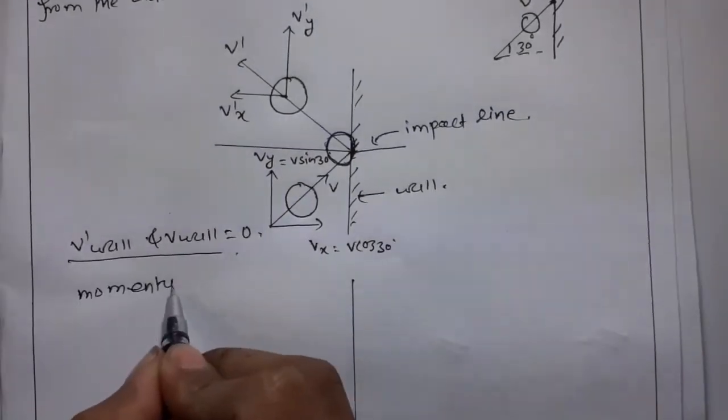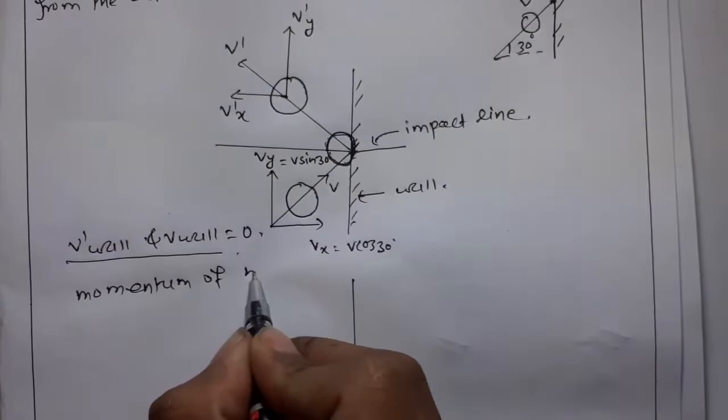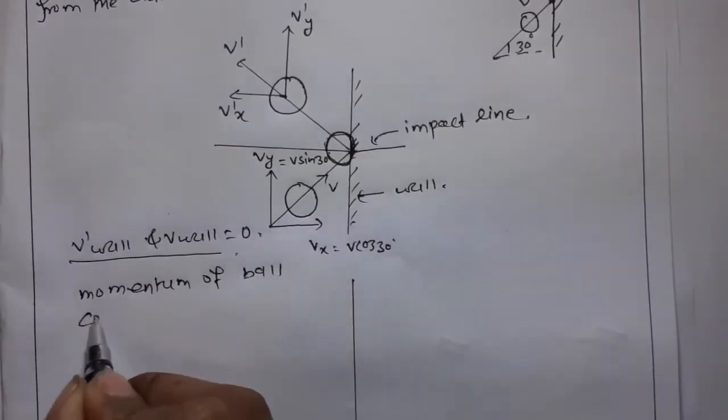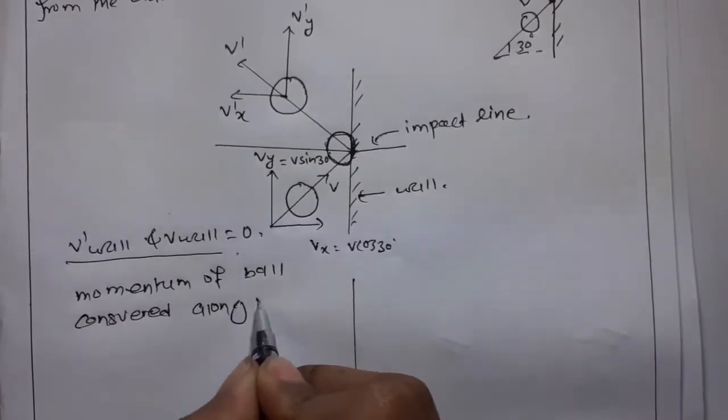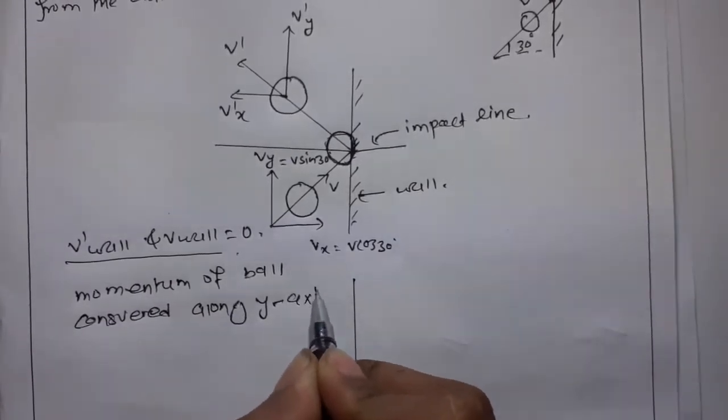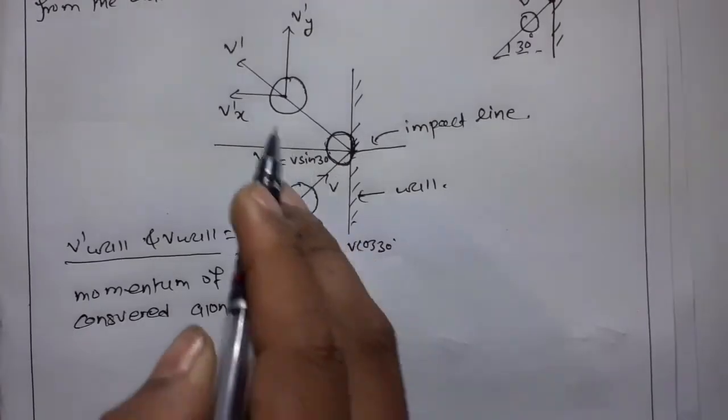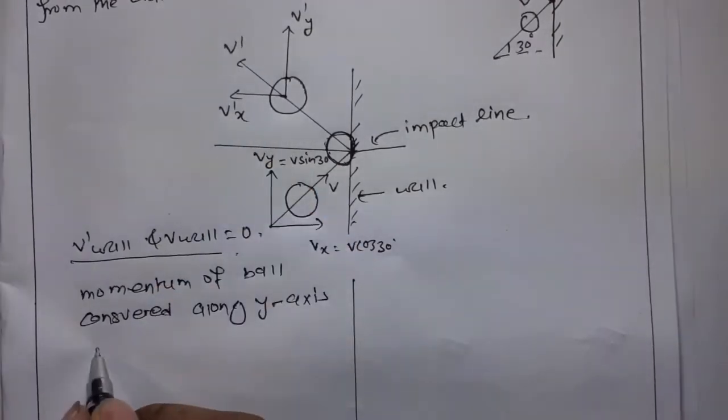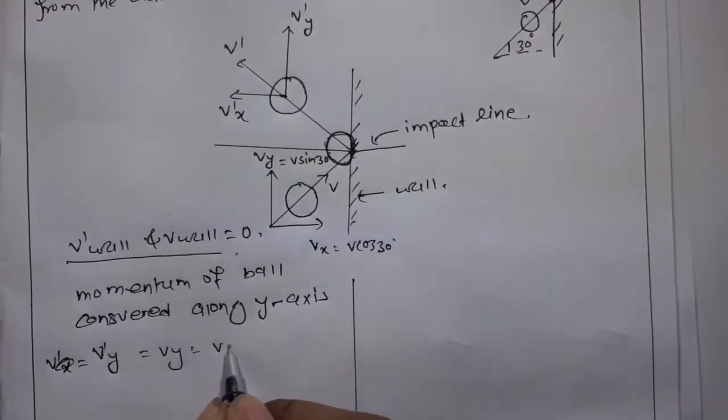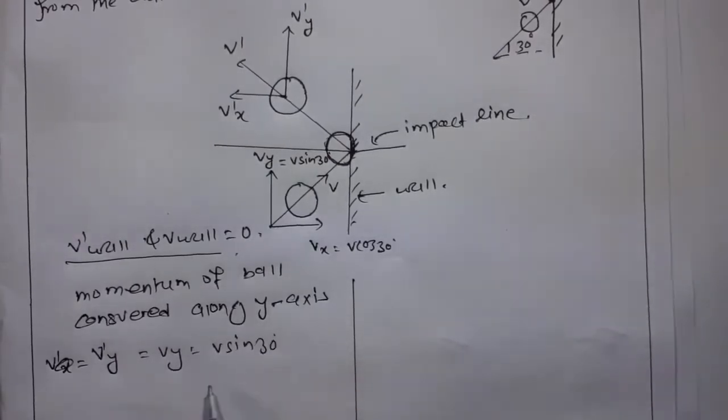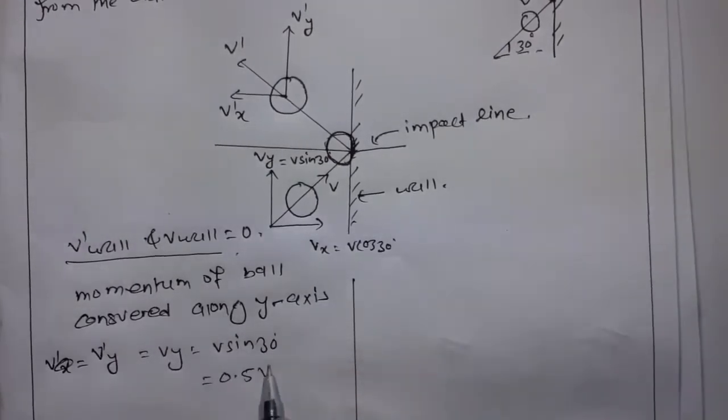Momentum of the ball is conserved along the y-axis, so v'_y equals v_y equals v sin(30°), which is 0.5v.